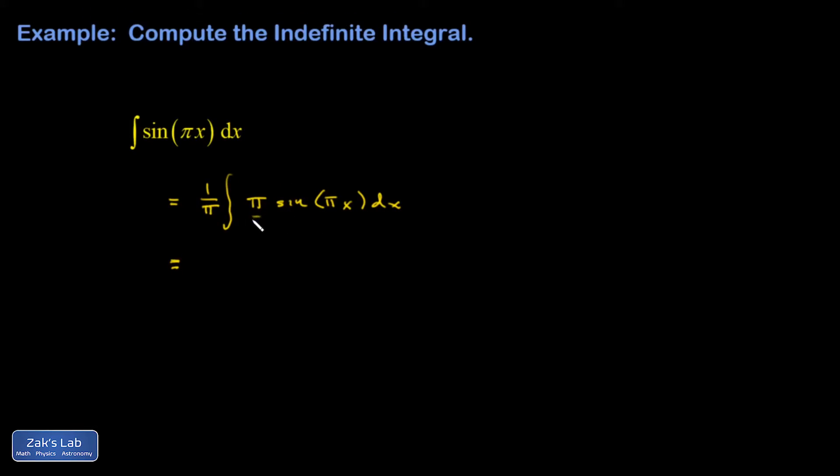All right, so now I have the consequences of the chain rule sitting right here, and I'm really just trying to guess the antiderivative of the sine function, which is just a negative of a cosine.